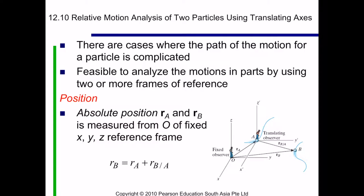Welcome to 12.10 Relative Motion Analysis of Two Particles Using Translating Axis. Throughout this chapter, the absolute motion of a particle has been determined using a single fixed reference frame.